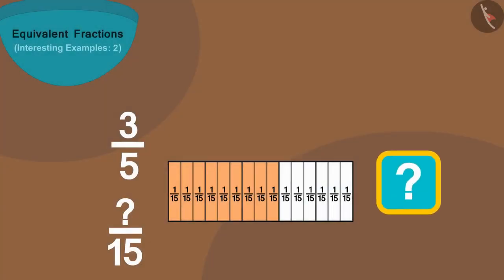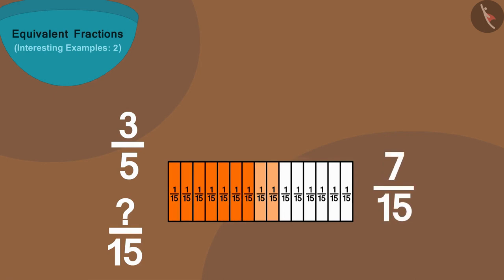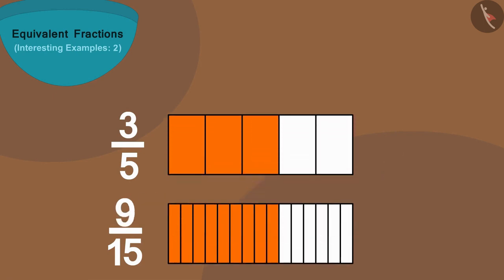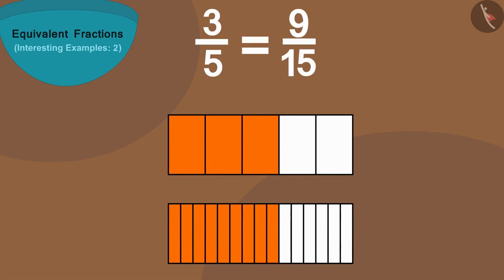Can you now tell how many parts out of 15 are equal to 3 colored parts of the bottom strip? Let's see. Yes, 9 parts. In this way, 3 by 5 is equal to 9 by 15.